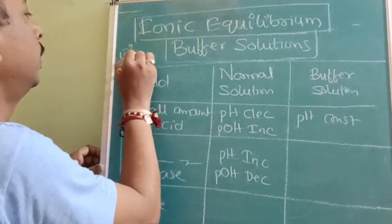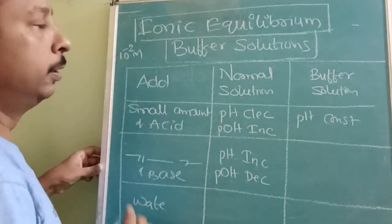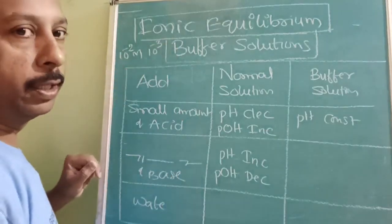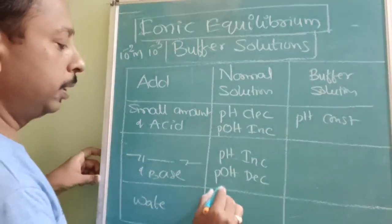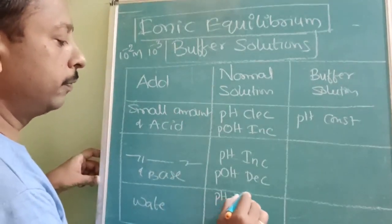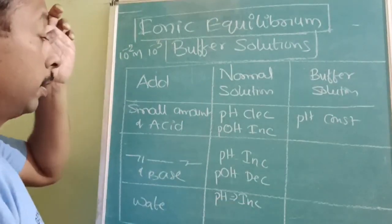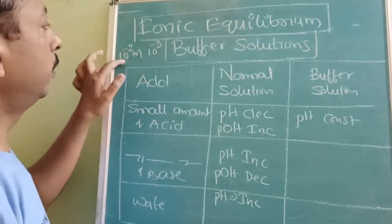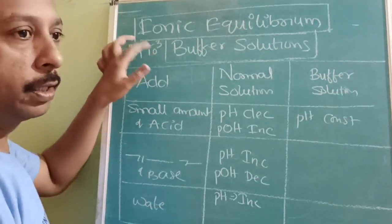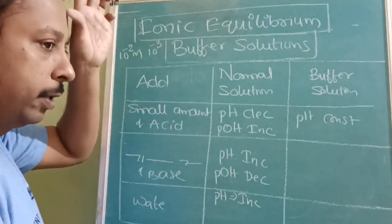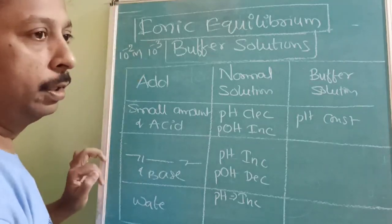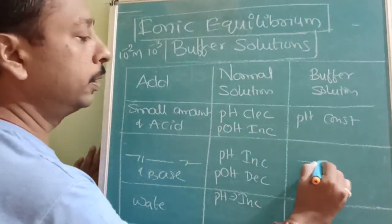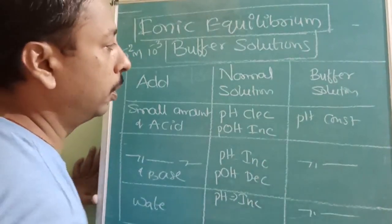Let us take 10⁻² molarity. By dilution, concentration decreases to 10⁻³. Then pH will increase — earlier concentration was 10⁻² molarity so pH was 2; now diluted 10 times, concentration becomes 10⁻³, therefore pH will increase. In all these cases for a buffer, pH will remain constant.